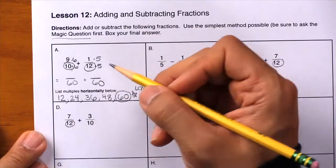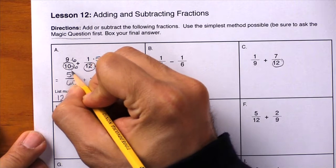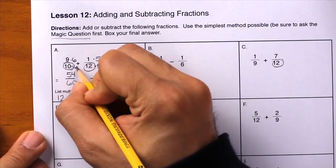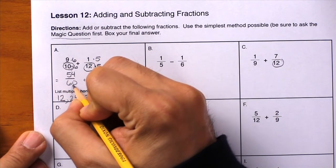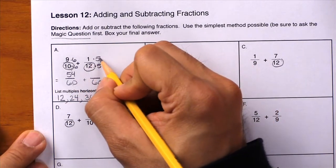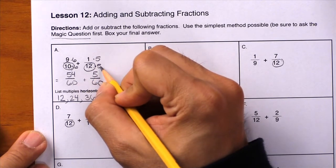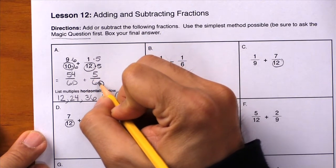Now it's just simple multiplication. 9 times 6 is 54. 10 times 6 is 60, and it's already there. Next, we have 1 times 5 is 5. 12 times 5 is 60, and it's already there.